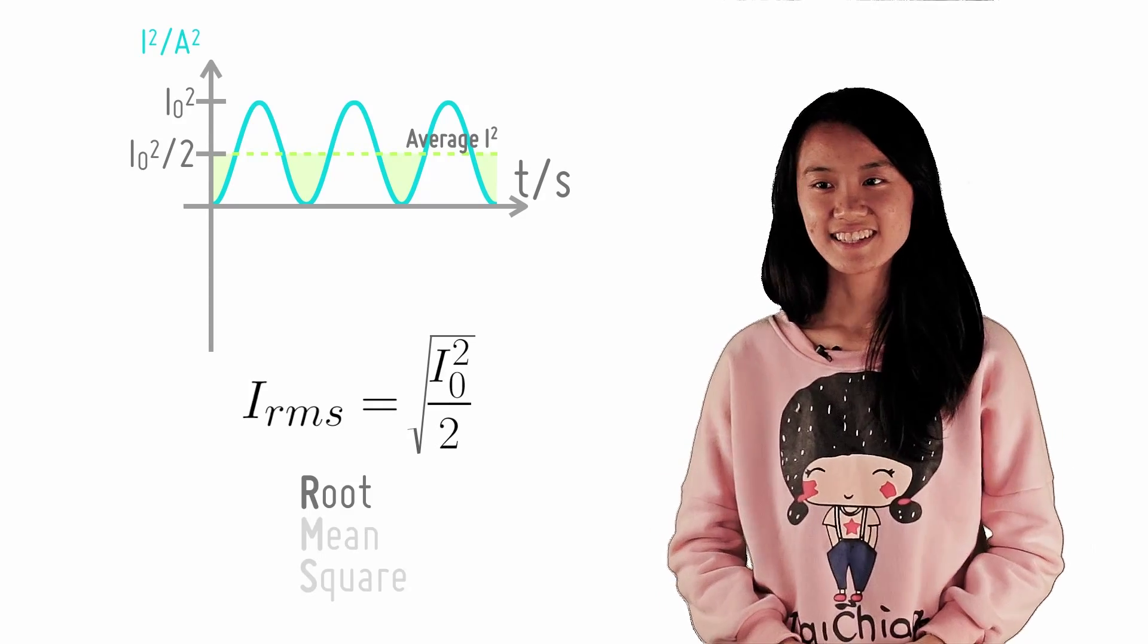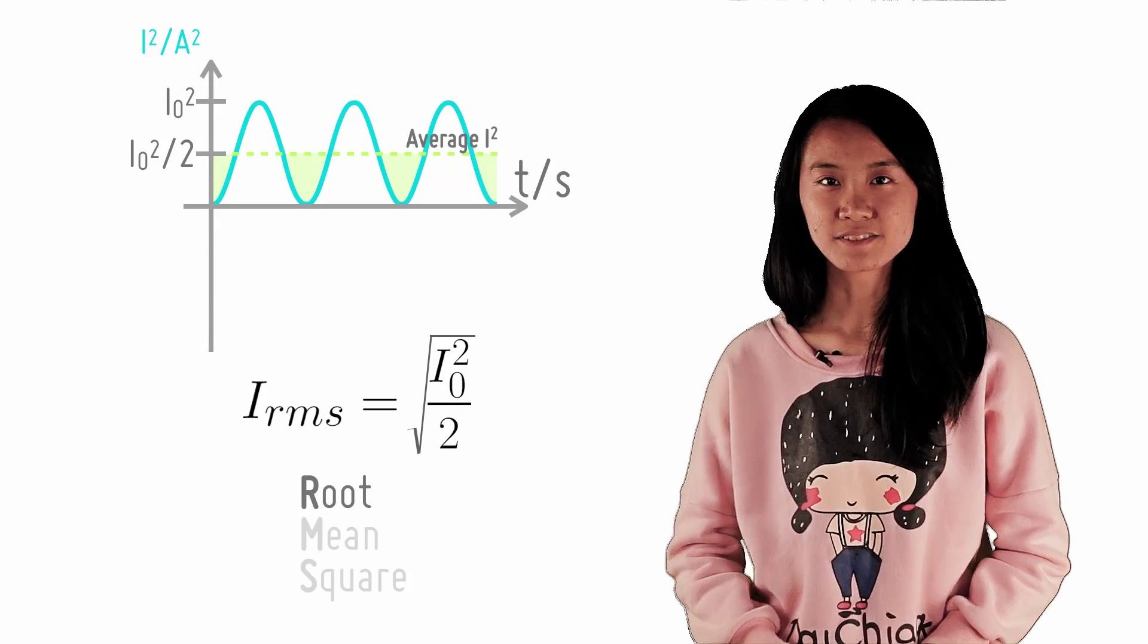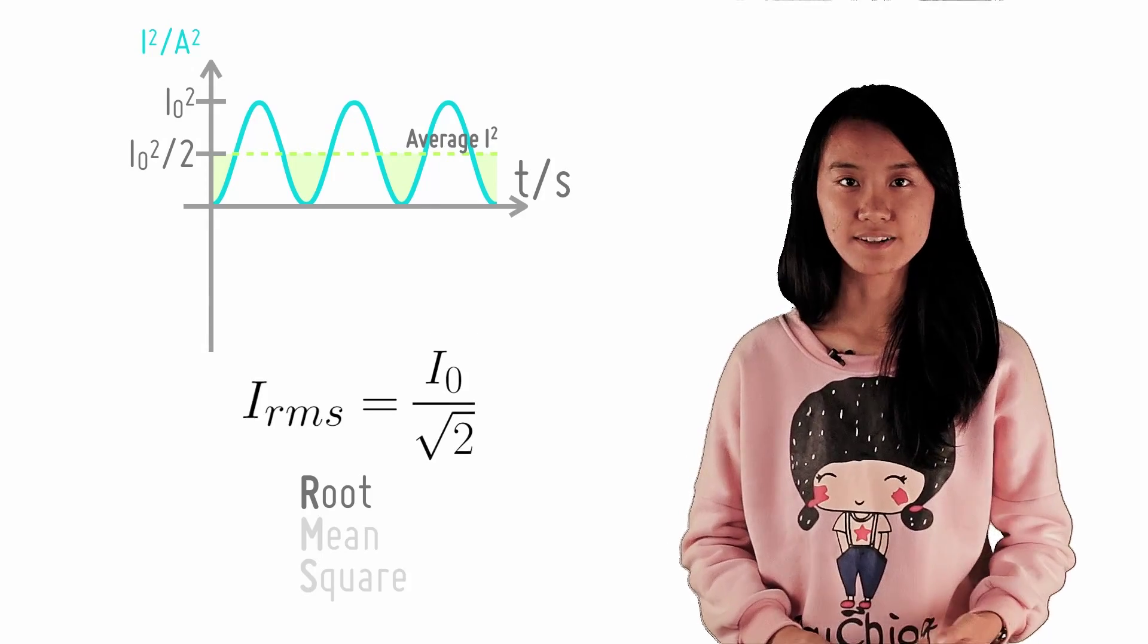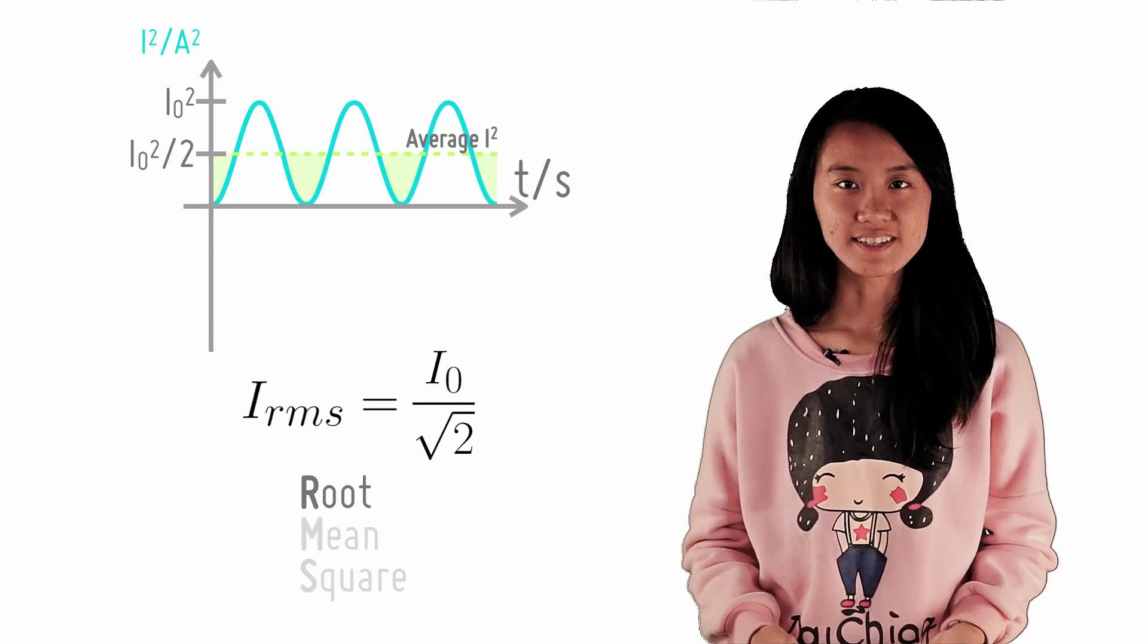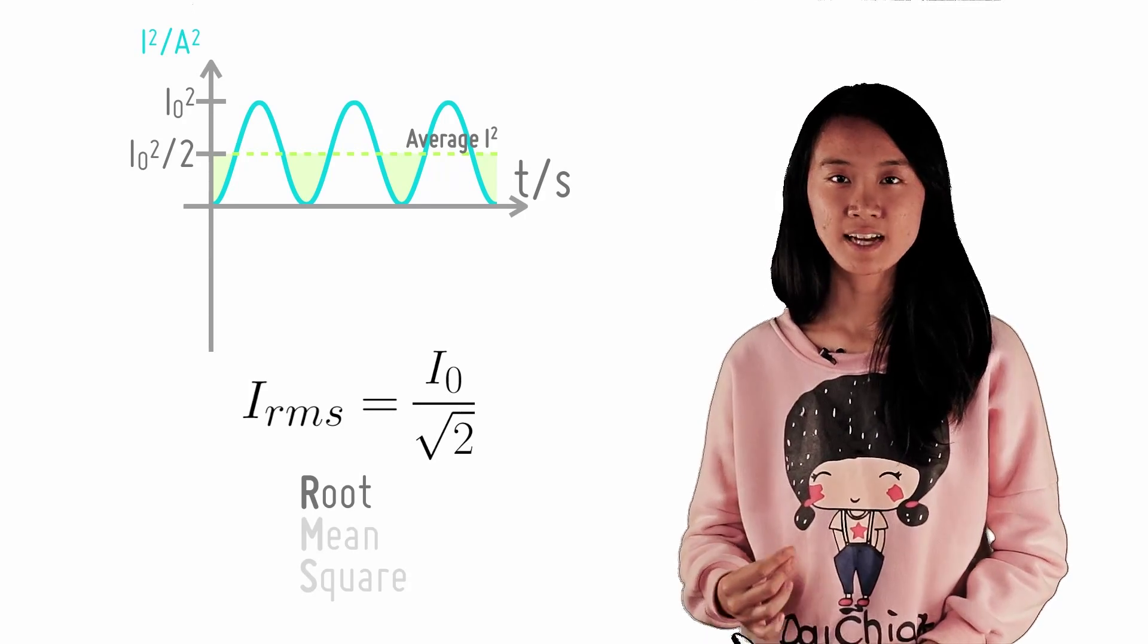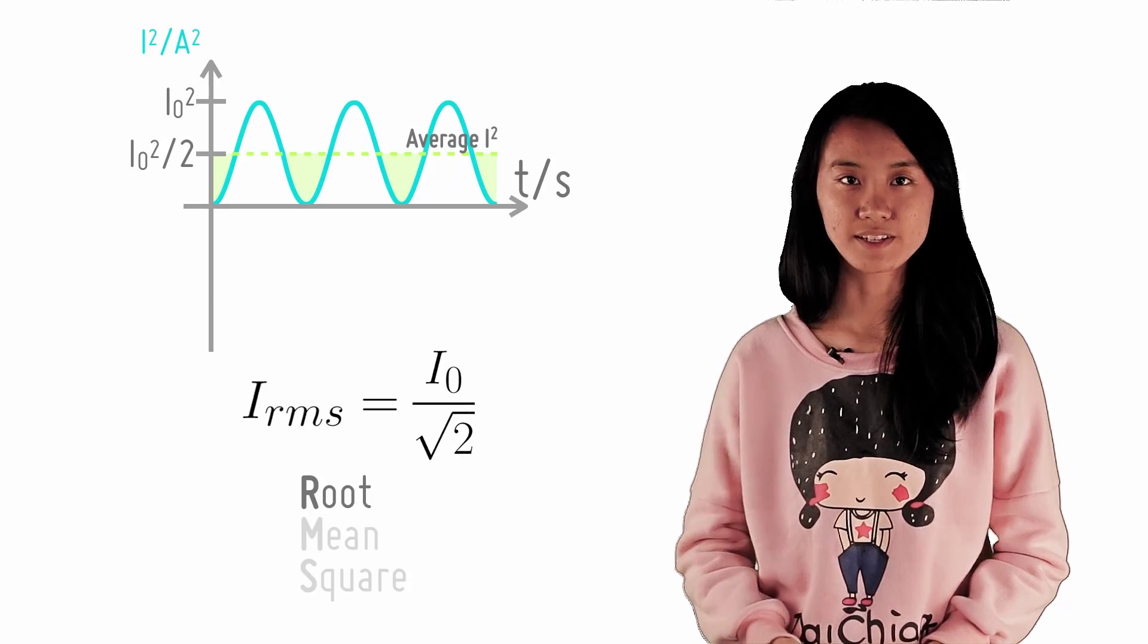For any sinusoidal AC, the RMS current is always equals to 1/√2 of the peak current. The same goes for voltage. With this new knowledge, the next checkpoint will discuss how you can find the average power in a sinusoidal AC.